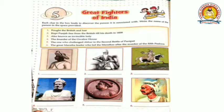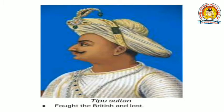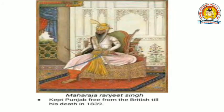So let's start. Tipu Sultan — Tipu Sultan was the king who fought the British and lost. Maharaja Ranjit Singh kept Punjab free from the British till his death in 1839.